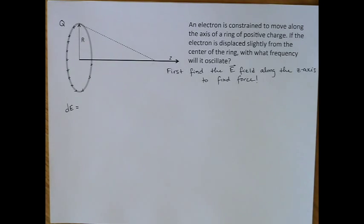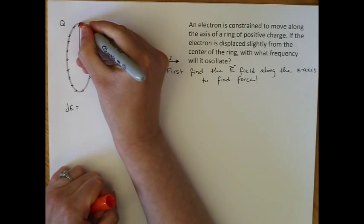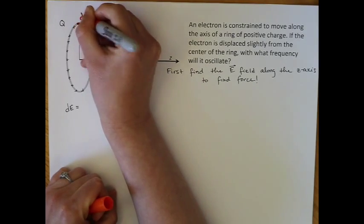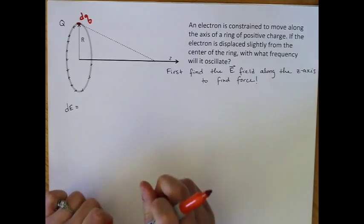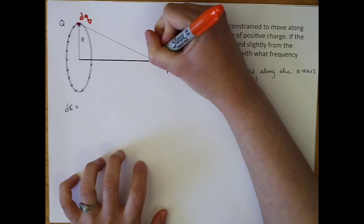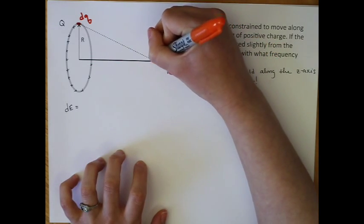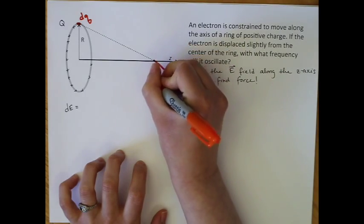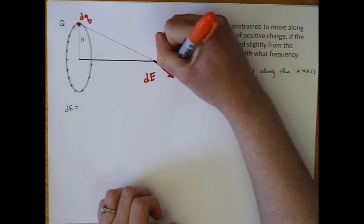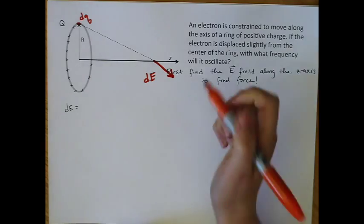Let's start by considering a piece of the field from this point right here. So this is a little dq, a little piece of charge. And that little piece of charge will produce an e-field at this point, which is some arbitrary point along the z-axis in this direction. So that's a little dE due to dq. That's supposed to be parallel to this dashed line, but you get the idea.